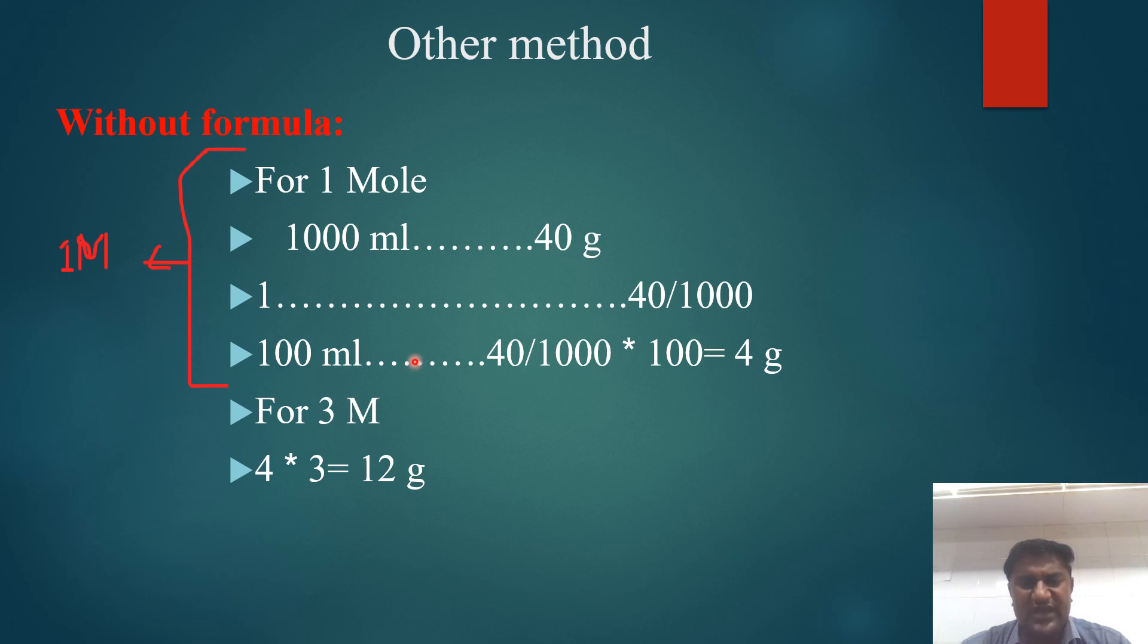We need to prepare 100 ml, so (40/1000) × 100 = 4 grams. For 3 molar solution, you need to multiply by 3. This is the 1 molar solution amount: 4 grams. For 3 molar solution, multiply: 4 × 3 = 12 grams.